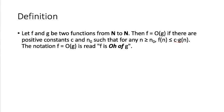Then f equals O(g) if there are positive constants c and n₀, such that for any n greater than or equal to n₀, we have f(n) less than or equal to c times g(n).